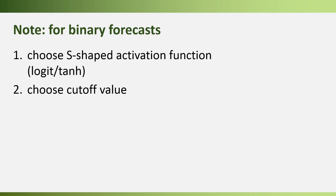We can use neural nets to forecast numerical values or binary values. To forecast binary values, use an S-shaped activation function such as the logit or hyperbolic tangent, so that forecasts end up as probabilities of the event of interest. If you want binary event/no-event forecasts, also choose your cutoff value — the threshold that converts the forecasted probability into a binary forecast.